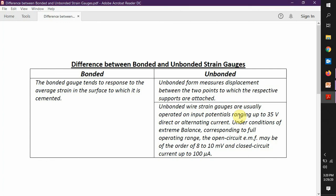The unbonded form measures the displacement between the two points to which the respective supports are attached. We have seen an example of the construction of unbonded strain gauges.